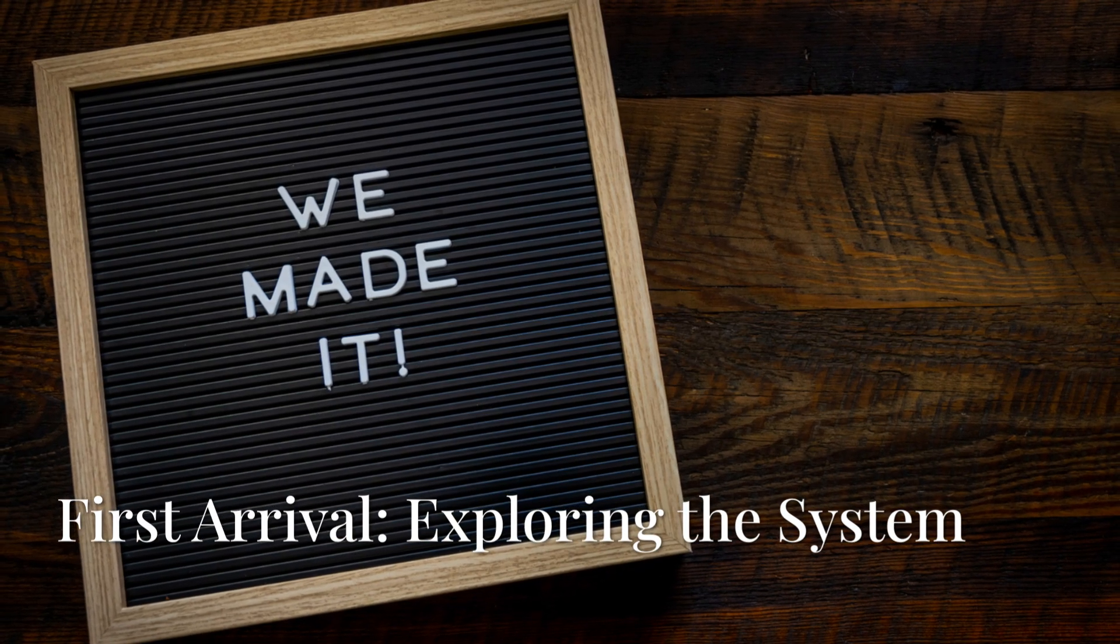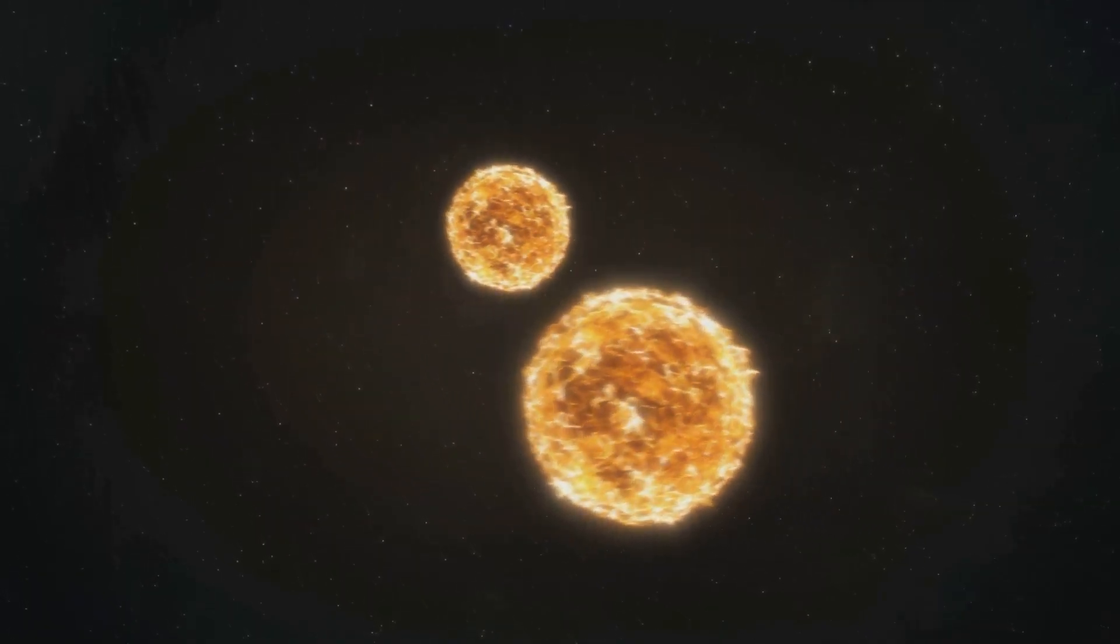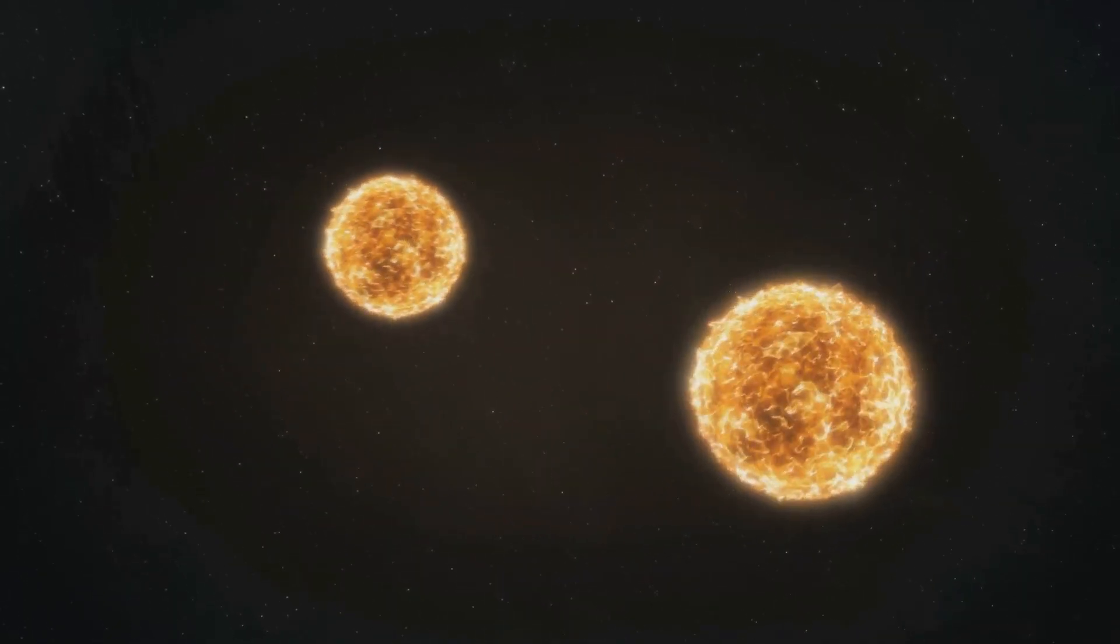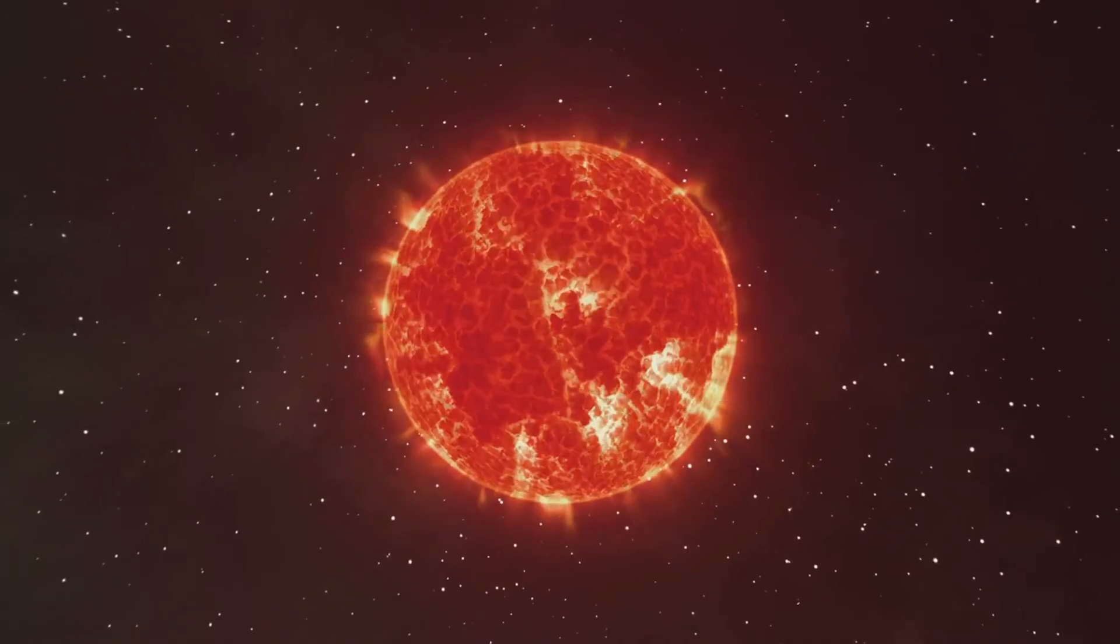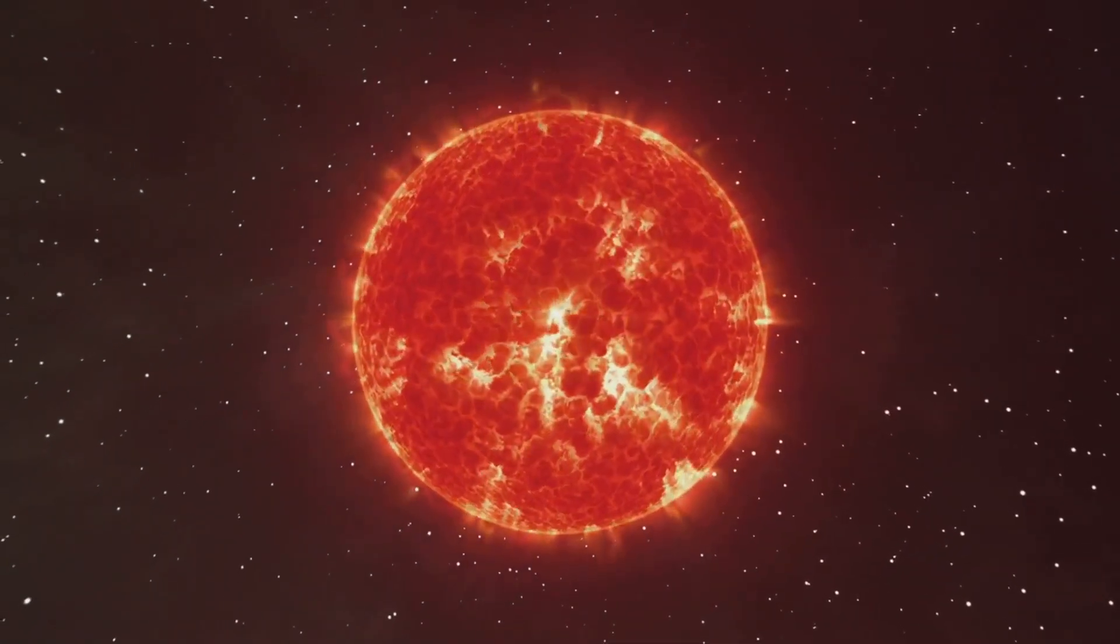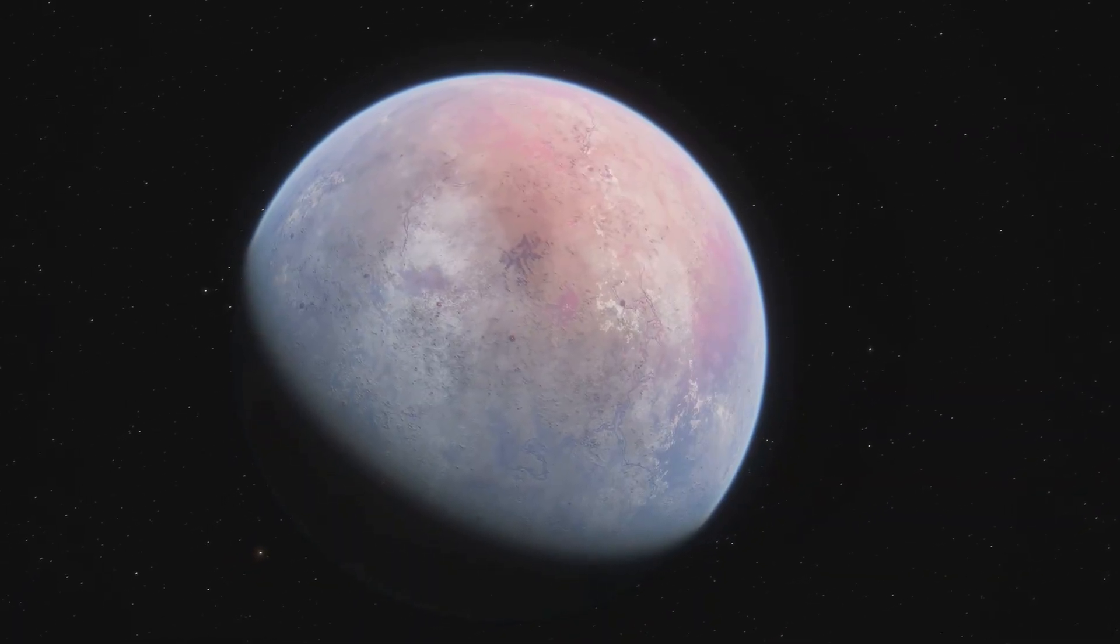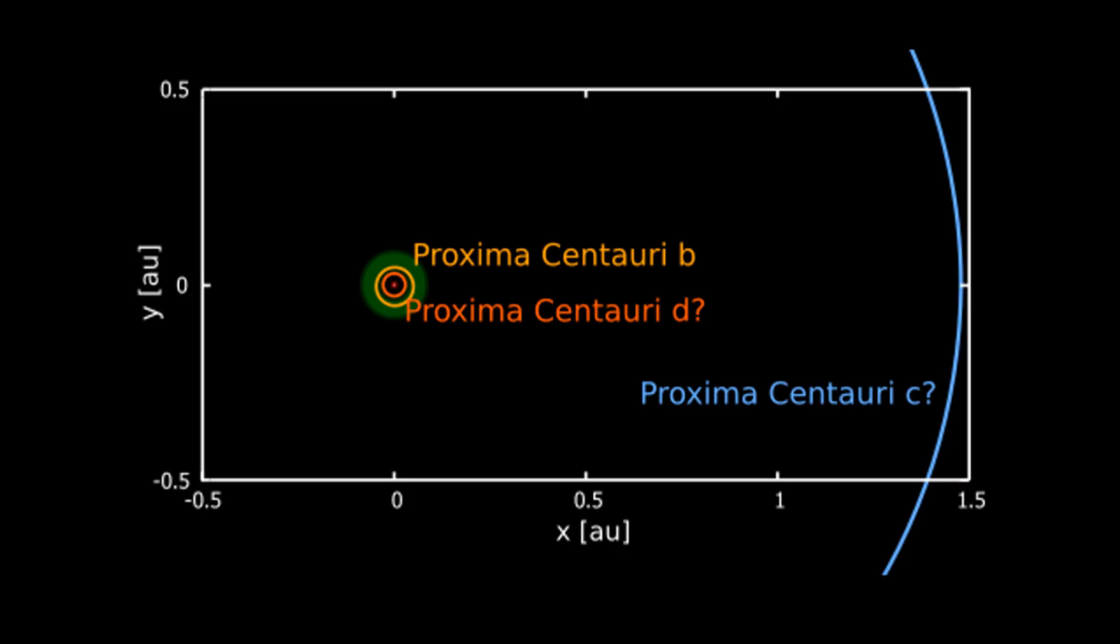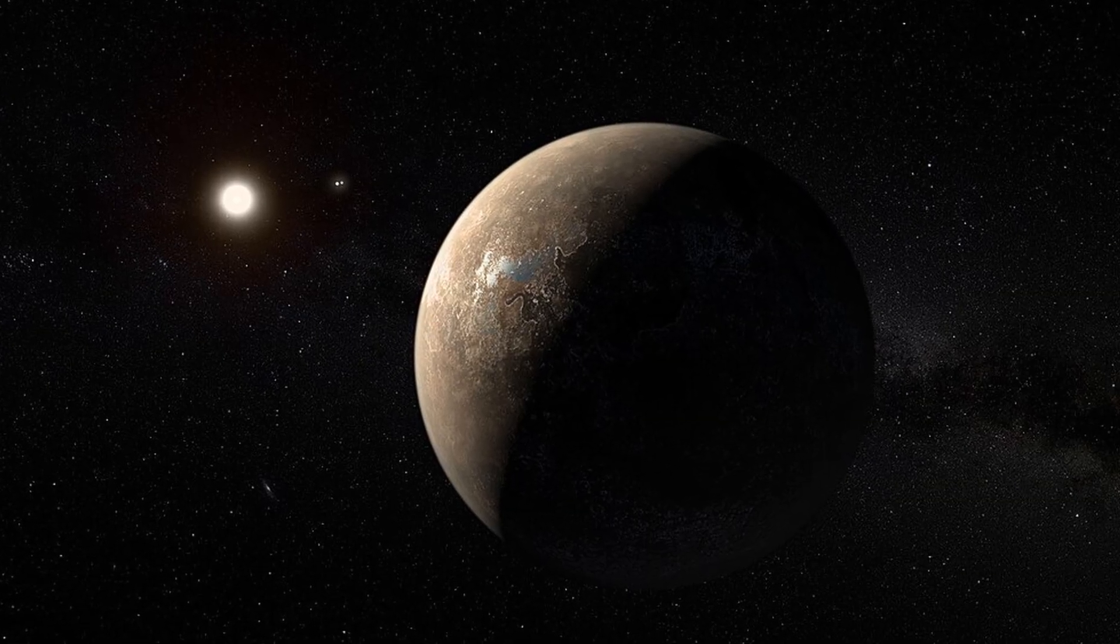After decades, or maybe even centuries, we've finally made it. We're in the Alpha Centauri system. It's not one star, but three. Alpha Centauri A and B are a binary pair. And way out on the fringe, there's a tiny red dwarf, Proxima Centauri. That's where our best shot is. A planet called Proxima B. It's about the size of Earth. It's in the so-called habitable zone, where liquid water could exist. But that's all we really know. Everything else? Total mystery.